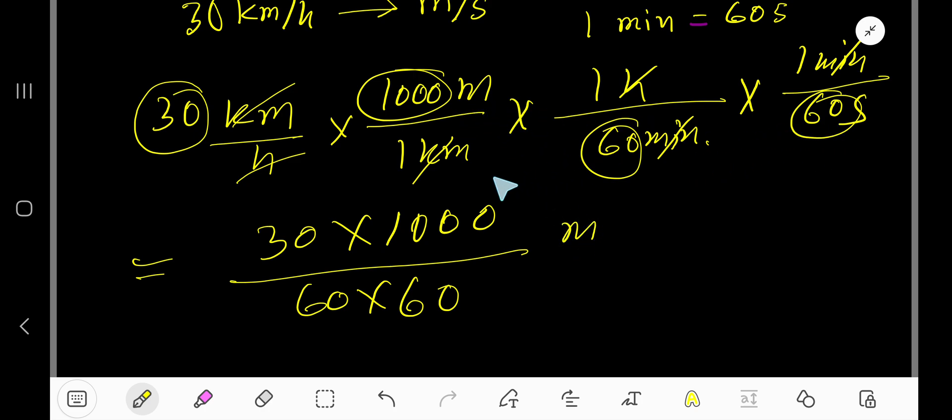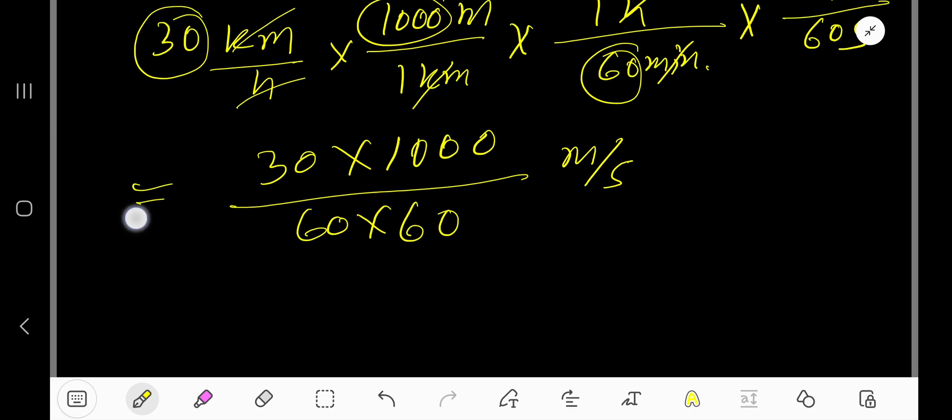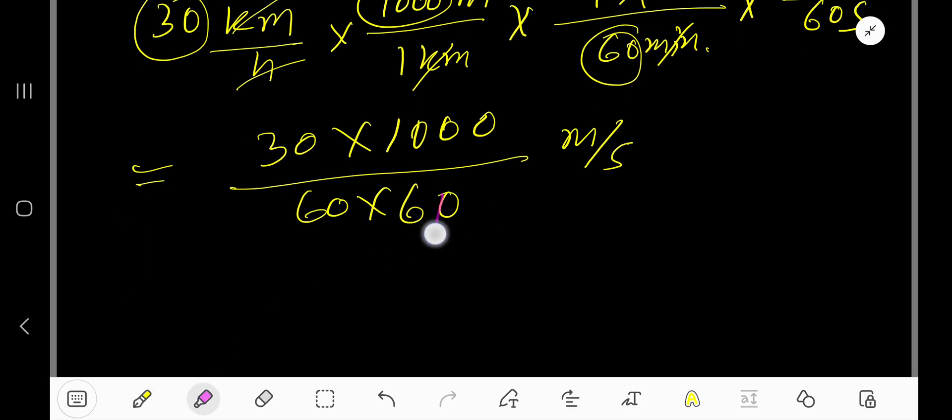Now cancel this zero, this zero, then this zero, this zero. Now divide this 6 by 6, you will get 1. Divide this 30 by 6, you will get 5. Divide this 10 by 2, you will get 5. Divide this 6 by 2, you will get 3.